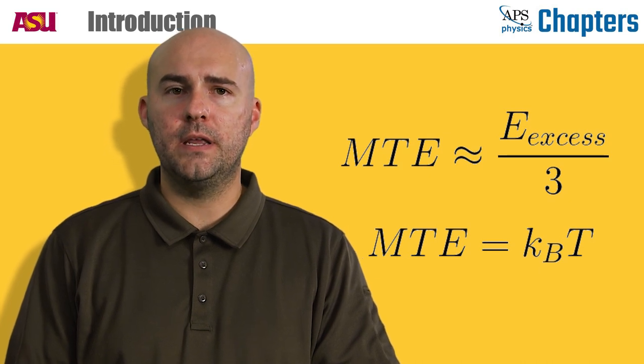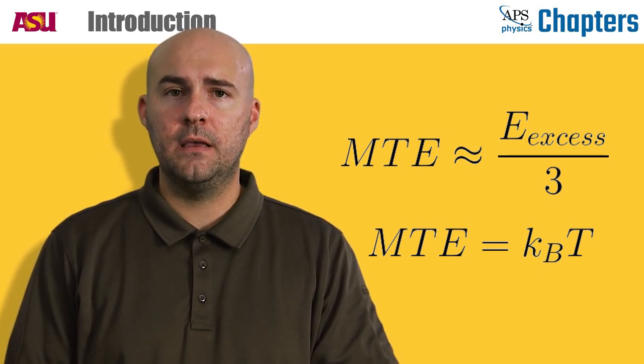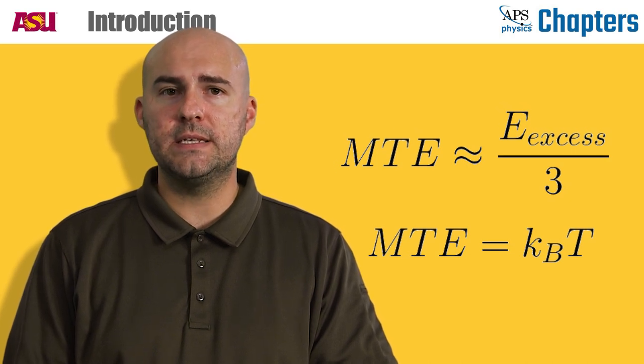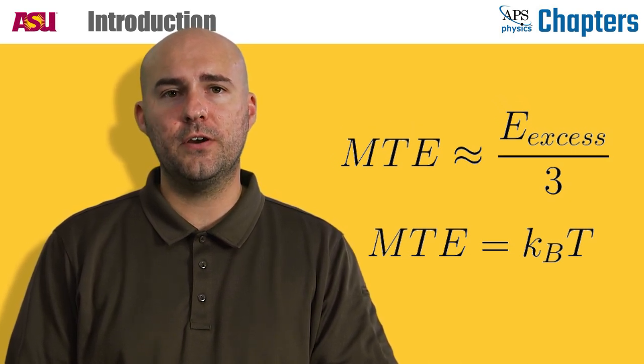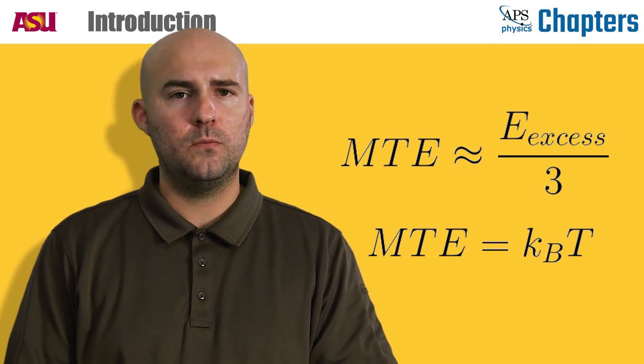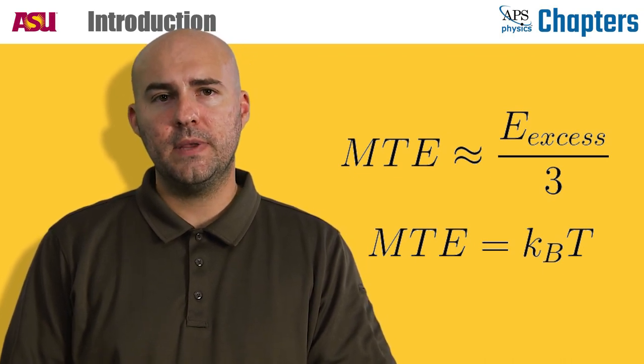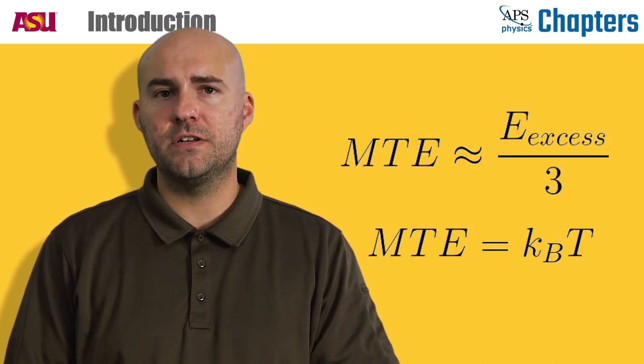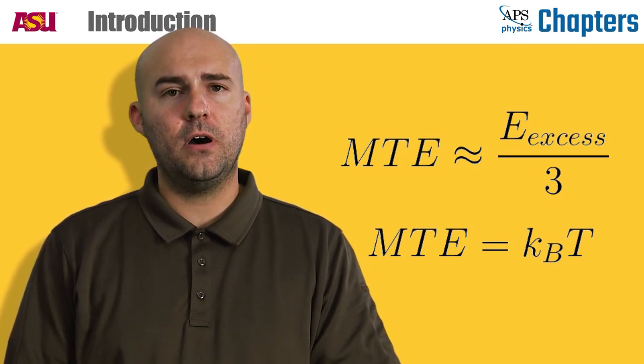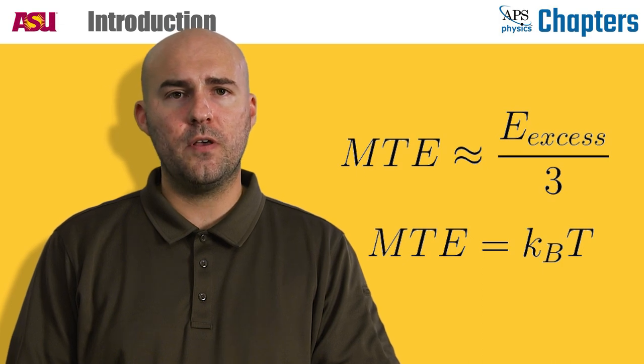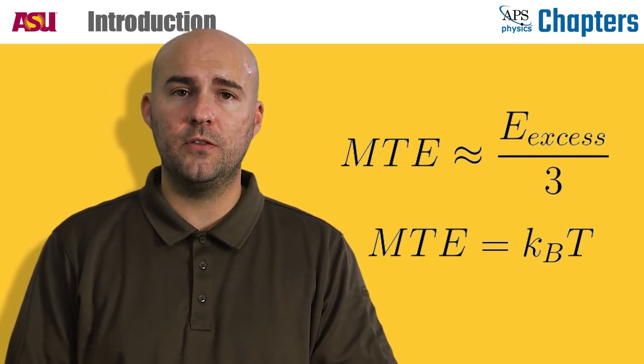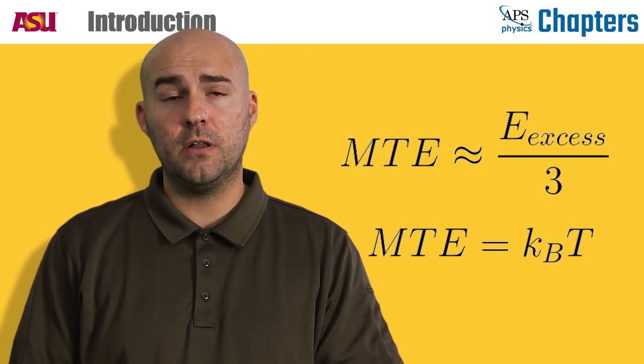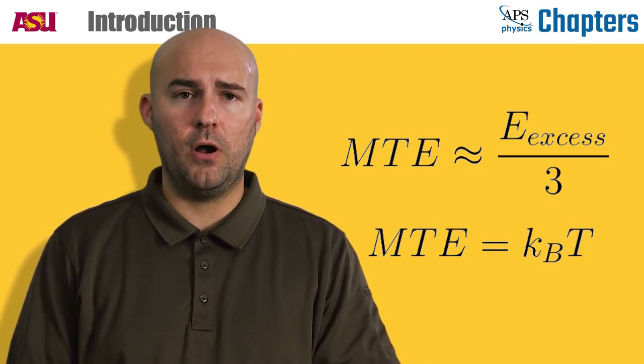Next, we can look at how our operating conditions can impact the MTE. It turns out that for most photocathodes, the MTE roughly obeys this relationship where it is equal to one-third of the excess energy. But what is the excess energy? Simply put, it is the difference between the energy of the photons in the laser pulse and the work function of the photocathode. If you recall, I said that for photoemission to work, the energy of the photons in the laser pulse must be greater than the work function. You can think of it as paying a toll to remove the electrons. The closer you are to exact change, the smaller the MTE.